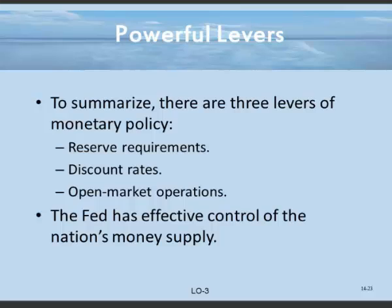The government only has two sets of tools. One is fiscal policy — we've already seen that, how the government can manipulate tax policy and spending policy to affect C plus I plus G. And in these chapters, we're talking about monetary policy and how it can also shift the aggregate demand curve.